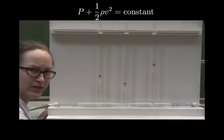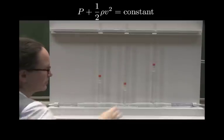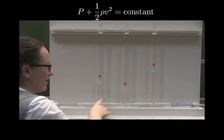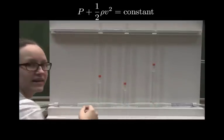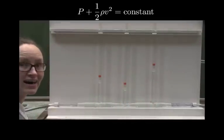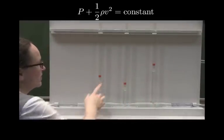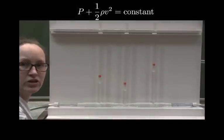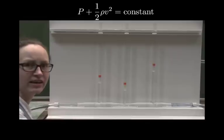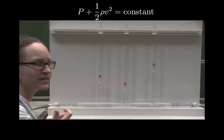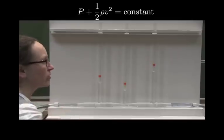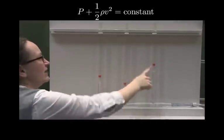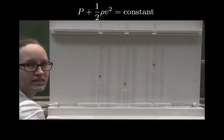Now, according to Bernoulli's equation, because we have the same cross-sectional area here as here and the height is the same, the pressures here and here should be equal. So can you think — what is going wrong? Why are these two heights not the same?